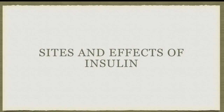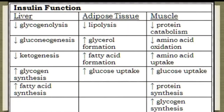Insulin affects several structures in the body: fat cells, the liver, and muscles. Your body's self-preservation is remarkable. If you're starving, your liver undergoes gluconeogenesis to create glucose; your fat breaks down to create glucose and fatty acids; and your muscles break down to generate glucose as well. In times of plenty, when sugar is abundant in the blood, your liver builds up glycogen for future use, stores fat for energy, and your muscles absorb amino acids and bulk up.